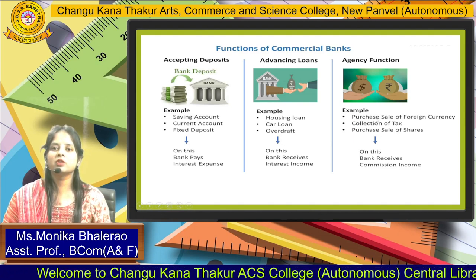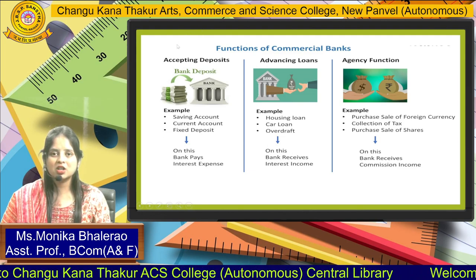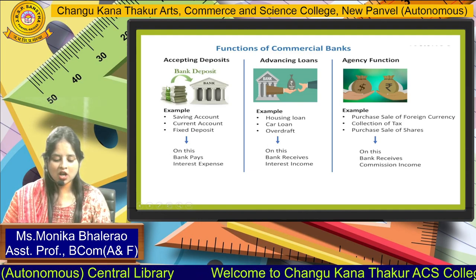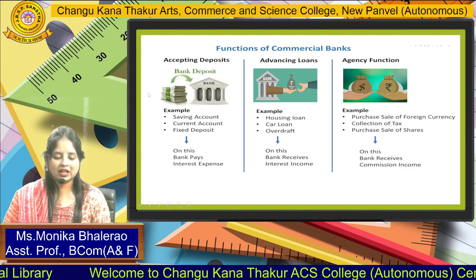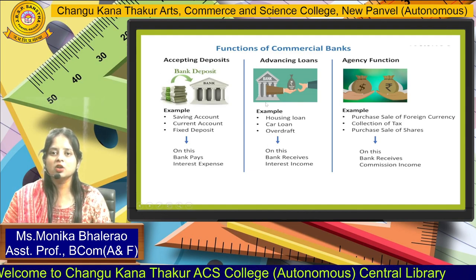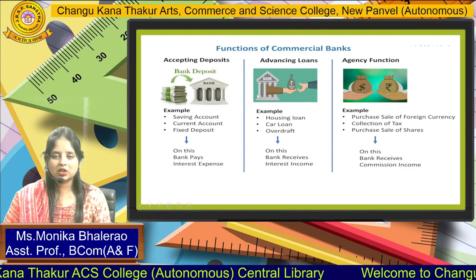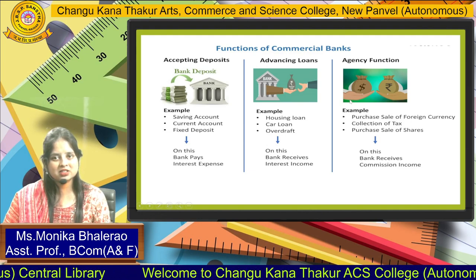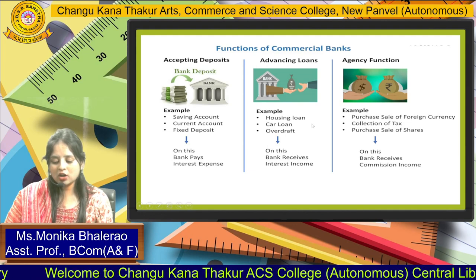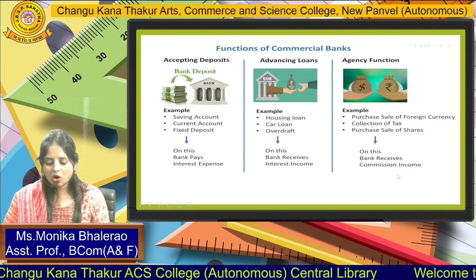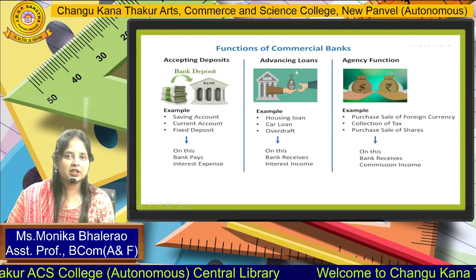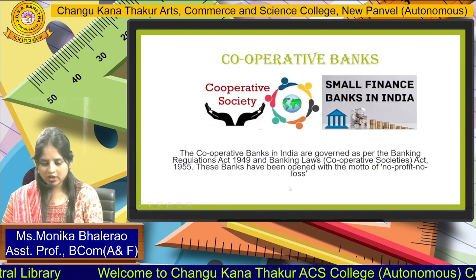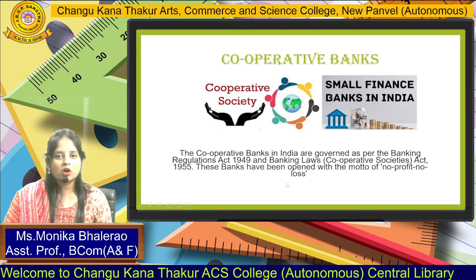The functions of commercial banks: first, accepting deposits — examples include savings accounts, current accounts, and fixed deposit accounts. Second, advancing loans — examples include housing loans, car loans, and overdraft facilities. Third, agency functions — commercial banks also play an agency role, such as purchase and sale of foreign exchange, collection of tax, and purchase and sale of shares.